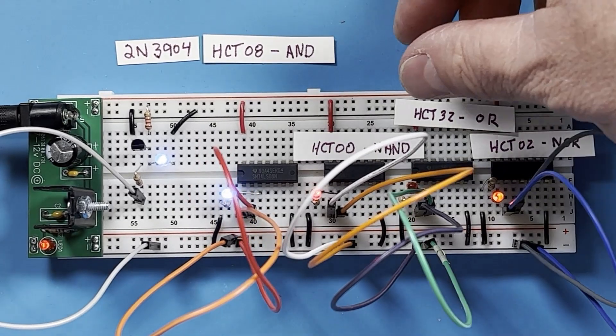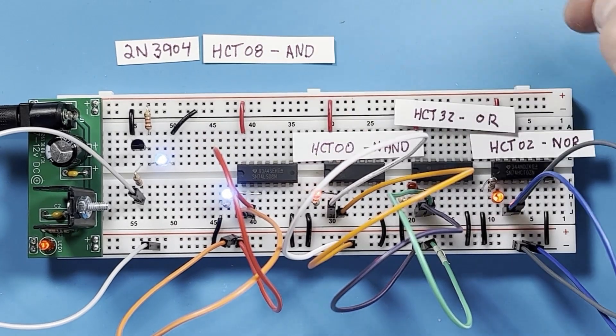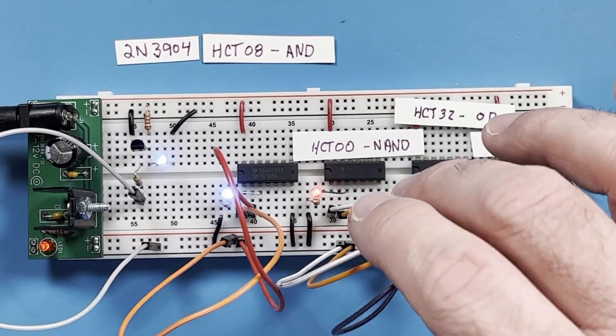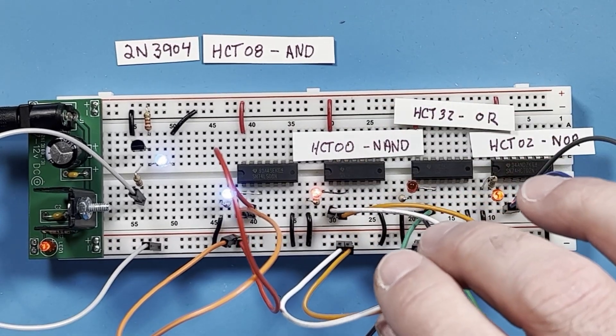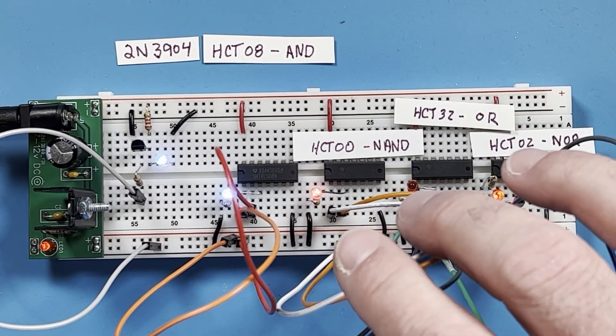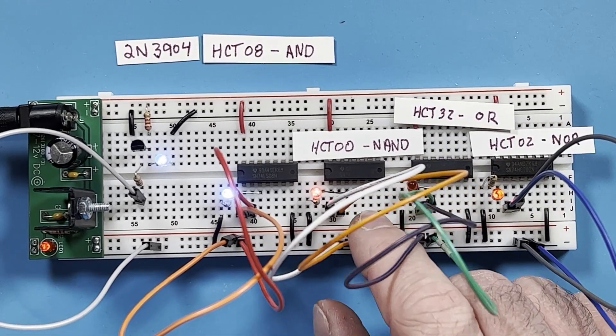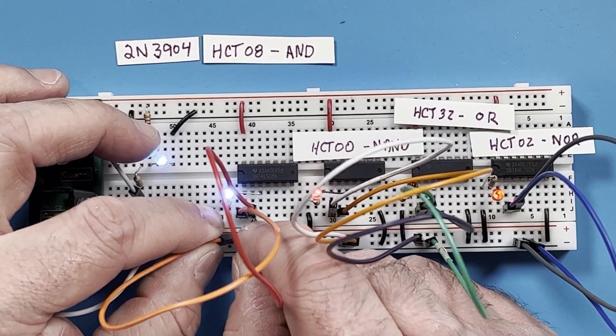Now right next to this we have an HCT00 NAND gate. A NAND gate may sound confusing, but all it is, is an AND gate with an inverter on the output. So let's take a look at the AND gate again. The only time the output is high is if both inputs are high.